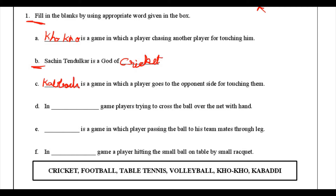D1: In blank game, players try to cross the ball over the net with their hands. The answer is volleyball — in volleyball they use their hands to push the ball over the net, and the ball should not fall on the floor.